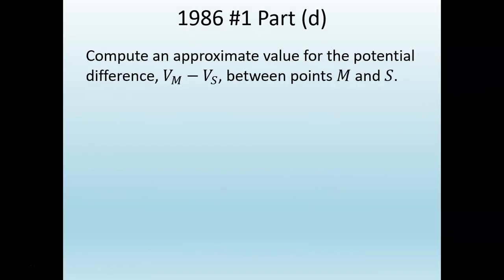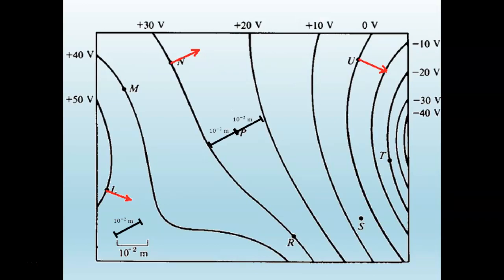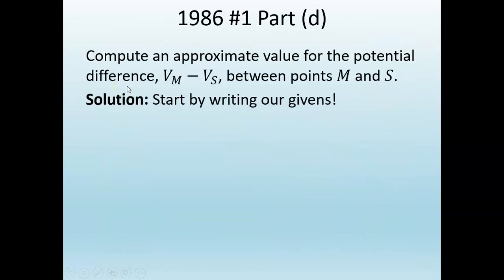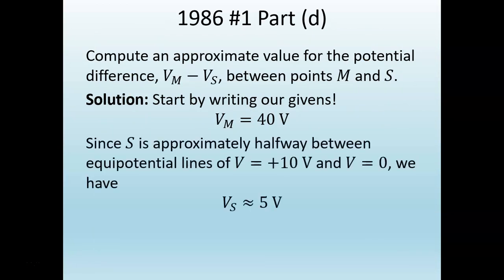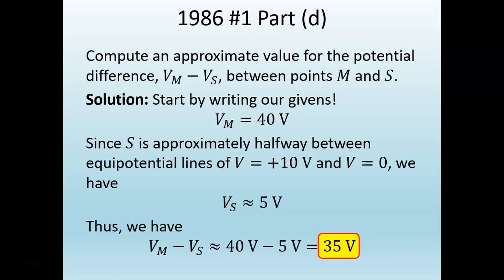For Part D: what is the approximate potential difference Vm minus Vs between points M and S? Point S appears to be about halfway between the 0-volt and 10-volt equipotential, so approximately 5 volts. Point M is on the 40-volt equipotential. Therefore, Vm minus Vs = 40 − 5 = 35 volts.